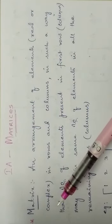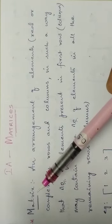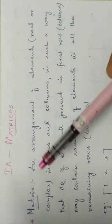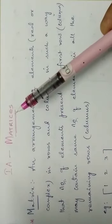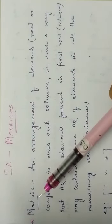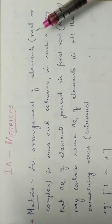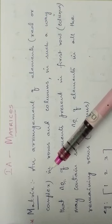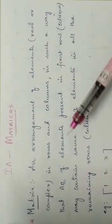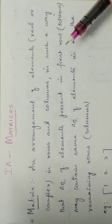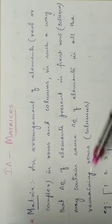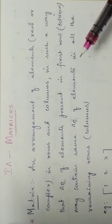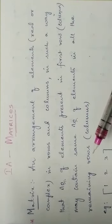Let us know what is a matrix. Matrix is the singular form; matrices is the plural form. A matrix is an arrangement of elements — real or complex — in rows and columns, in such a way that the number of elements present in the first row may contain the same number of elements in all the remaining rows or columns.